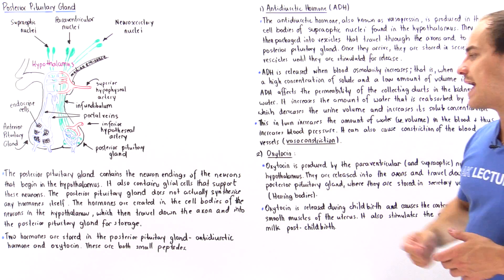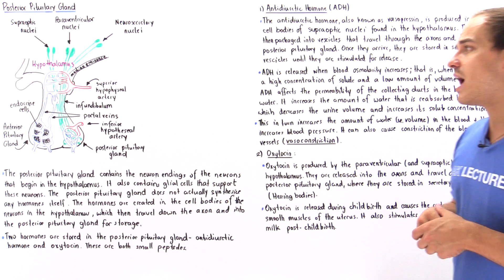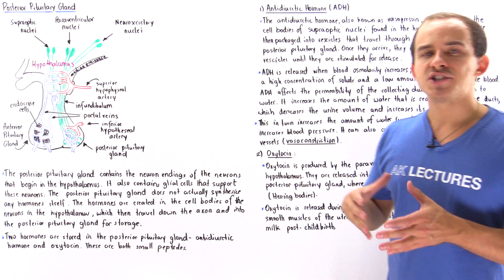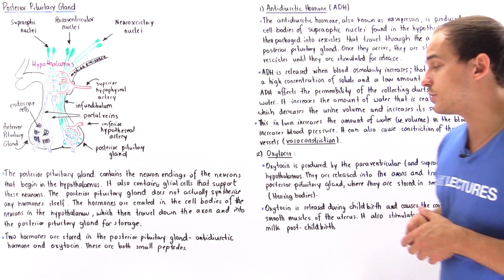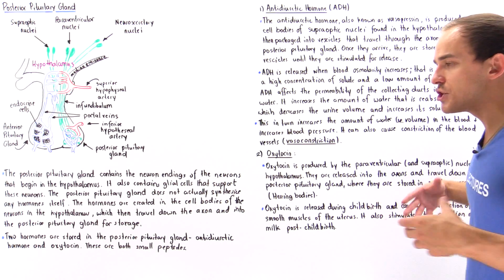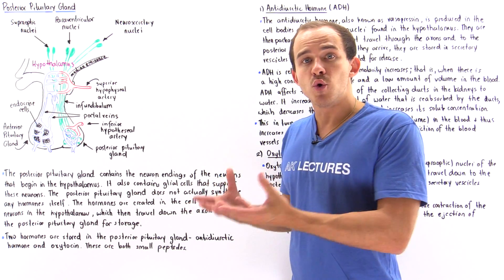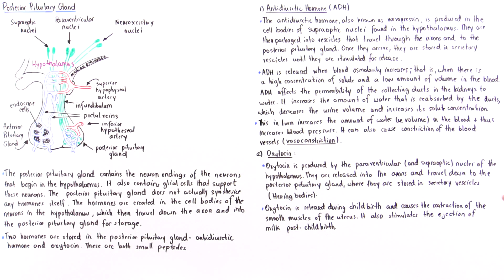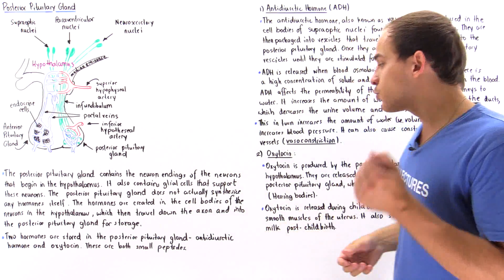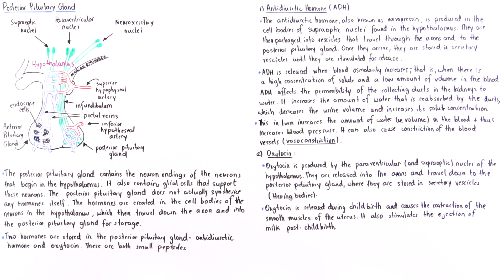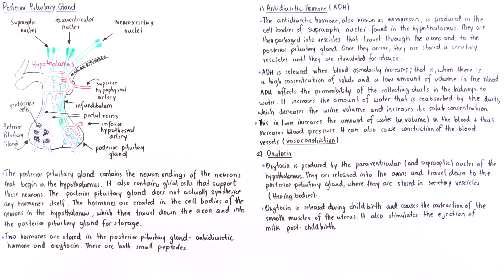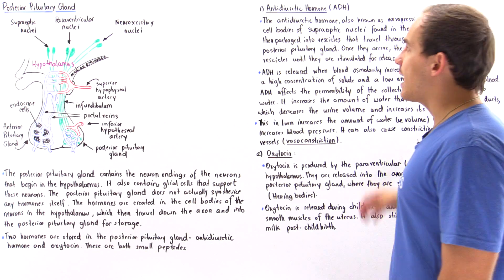Oxytocin is released during childbirth in females, causing contraction of smooth muscles in the uterus, which helps move the child out of the body. Post-childbirth, oxytocin also stimulates the ejection of milk from the glands in the breast. This is the primary function of oxytocin.